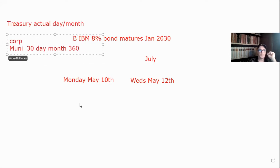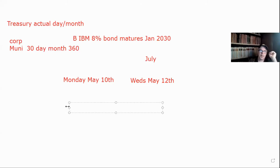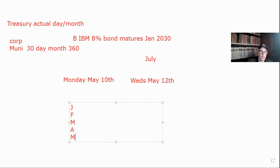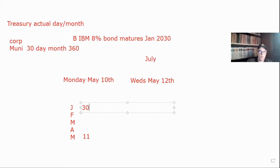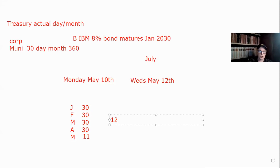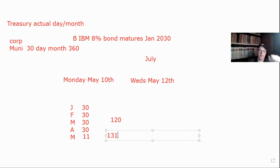So it settles on the 12th and we count to the 11th. So we have January, February, March, April, May. Since it's May, we know it's the day before settlement, so we know it's going to be 11 days in May. Now, how many days are in each month? Since it's a corporate — IBM is a corporate — we know that it's 30 days a month. So we're going to do 30, 30, 30, 30 — or four times 30 — so that's 120 days in the year, plus 11. So that's going to be 131 days of accrued interest.